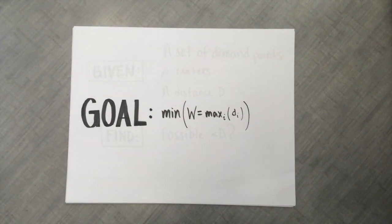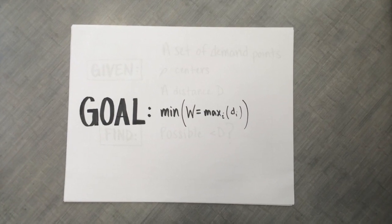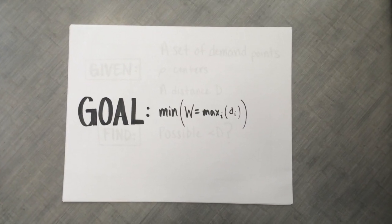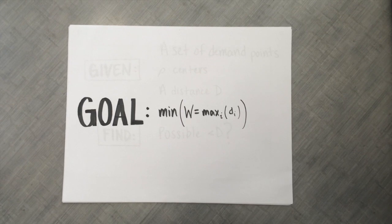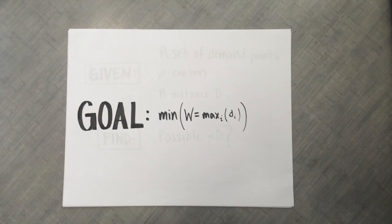Our goal is to find the state with the least cost, or in other words, with the minimum distance from the demand points to the centers. Therefore, the p-center problem is a combinatorial optimization problem.